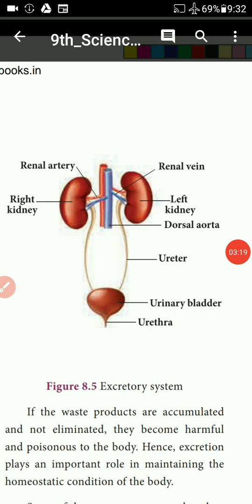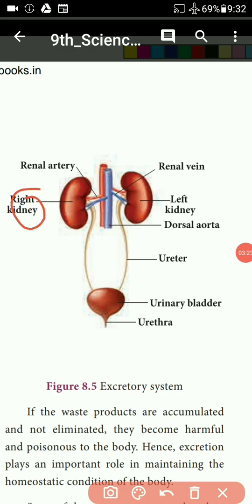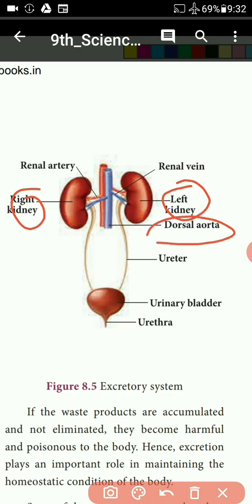In the diagram we can see: the right kidney and the left kidney, the aorta, and the renal artery — shown in red — which is incoming. And the renal vein, which is outgoing.